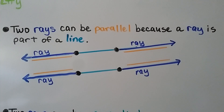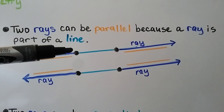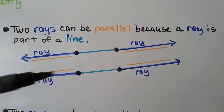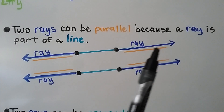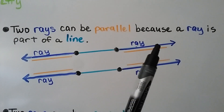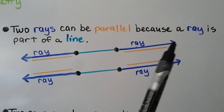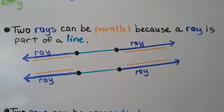Two rays can be parallel, because a ray is part of a line. So if this line is parallel to this line, then this part of the line — which is a ray — is parallel to this part of this line, which is also a ray. We could even say that this part up here is a ray: here is its endpoint where it begins, and it goes off with an arrow in that direction. These are parallel.